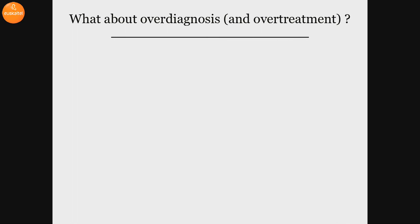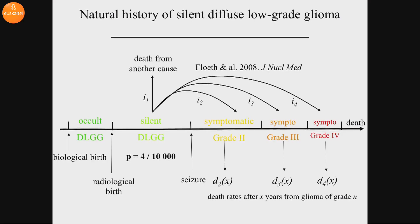If we think about screening, the first danger is to over-diagnose people. Maybe some people do have a silent glioma for their entire life and will never have heard about it, and we should not diagnose a silent glioma in these people. So what we need is to compare the risk to die from another disease versus the risk to die from the transformation of the silent glioma into a symptomatic glioma, and then into a malignant glioma.